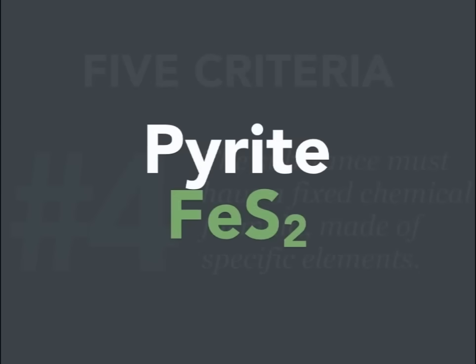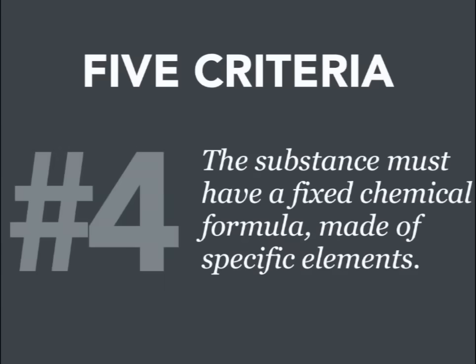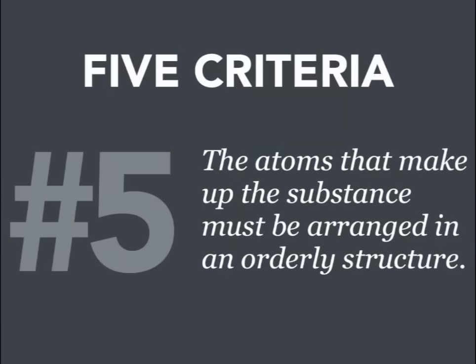Another example, pyrite, often known as fool's gold, has a chemical formula of Fe, which is iron, and S, which is sulfur. When these are bonded together in this particular arrangement, you get pyrite. So criteria four is that the substance must have a specific or fixed chemical formula — a specific recipe, if you will, of elements. And then finally, criteria number five, the atoms that make up the substance must be arranged in an orderly crystal structure, a specific structure.